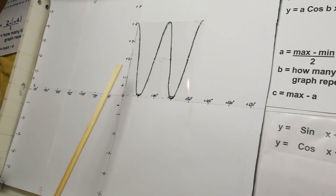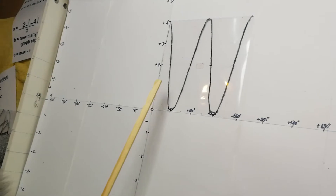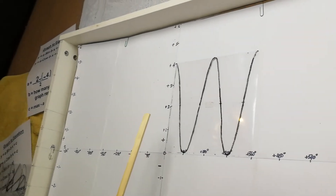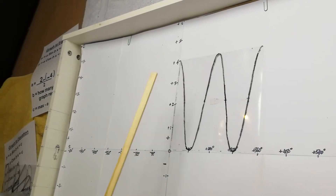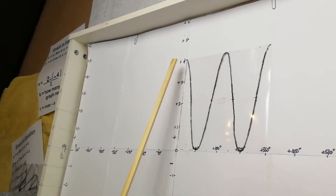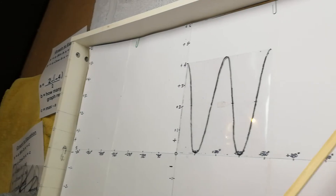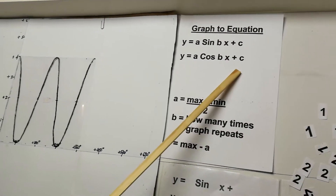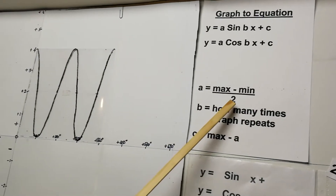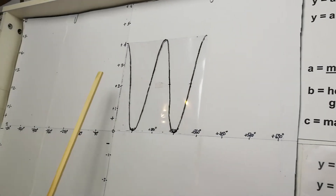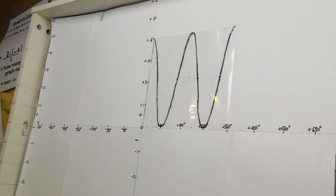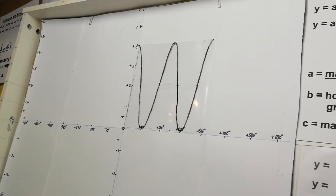Next graph: we decide if it's sin or cosine. It starts at the top, so it's a cosine graph — sin starts in the center, cosine starts at the top. For the a value: maximum minus minimum divided by 2. We're finding the height from the center to the top.